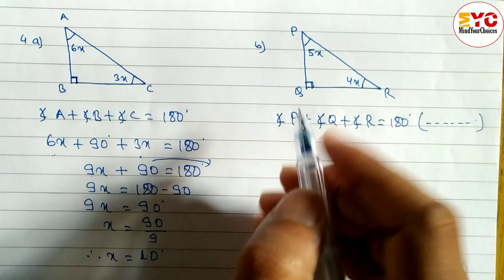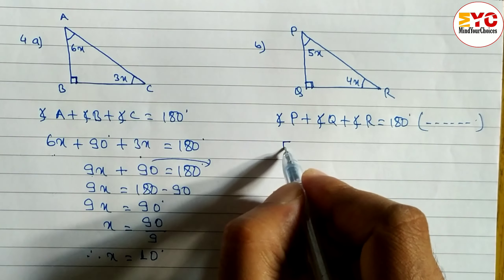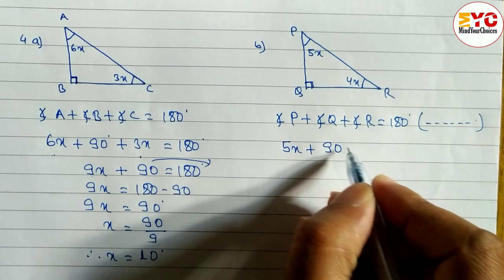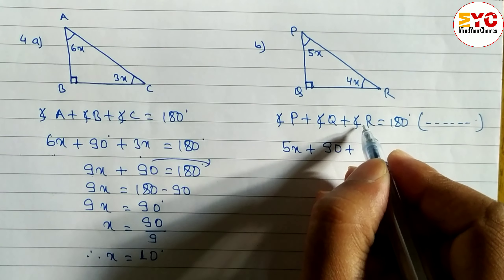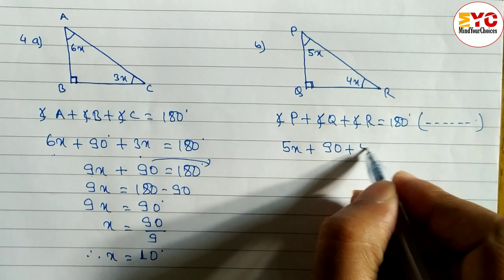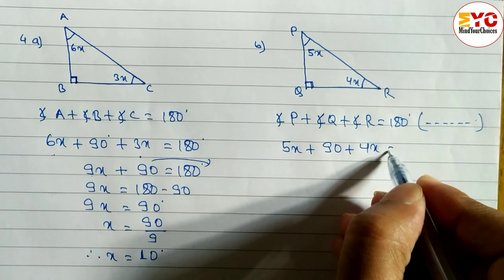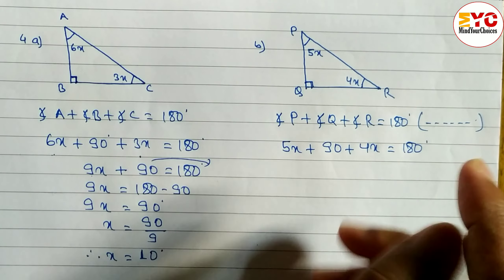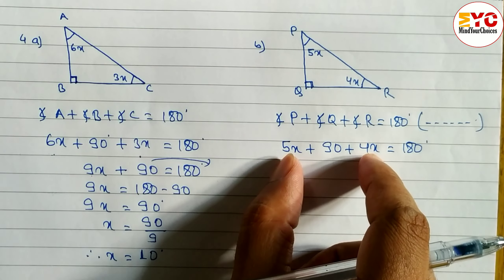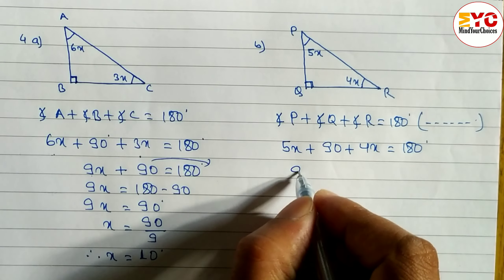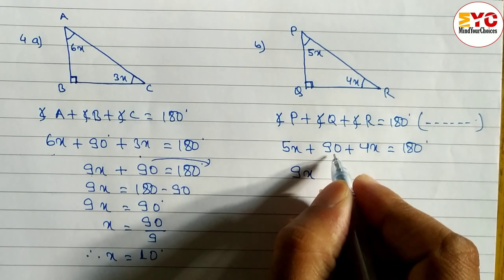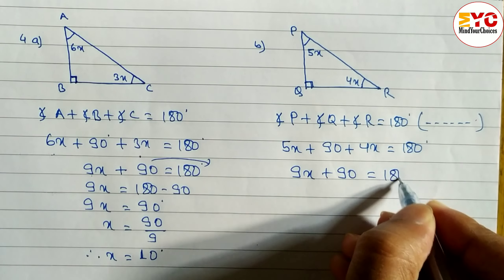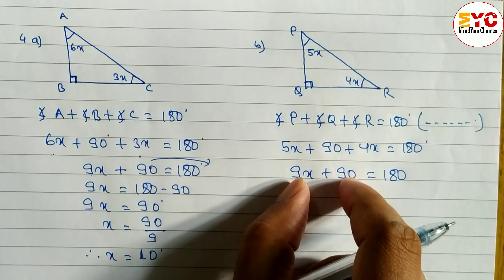What is the value of P? P is equal to 5x, so write 5x. Angle Q is 90 degrees, so write 90. Plus angle R is 4x, so write 4x, which equals 180. Now 5x plus 4x are like terms, so when you add them you get 9x. So we write 9x plus 90 equals 180. These two constants are unlike terms, so we cannot add them.